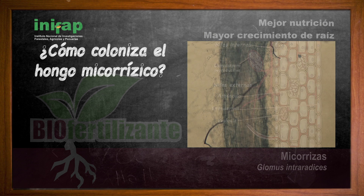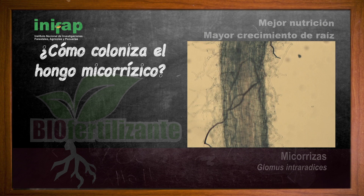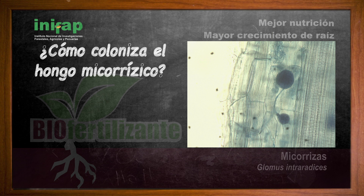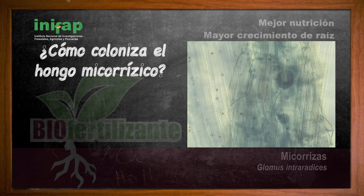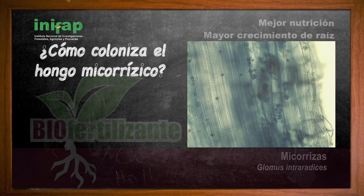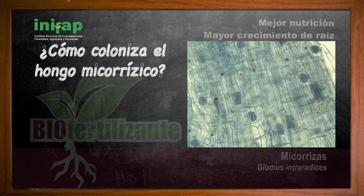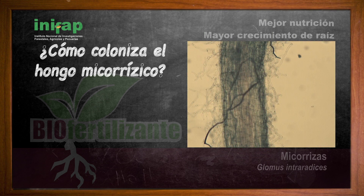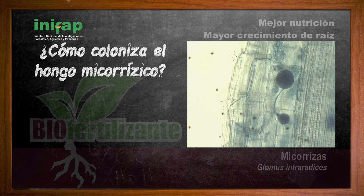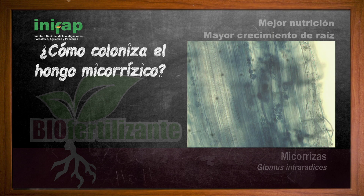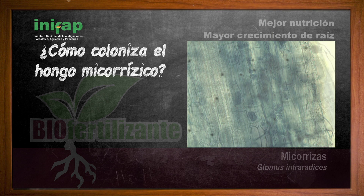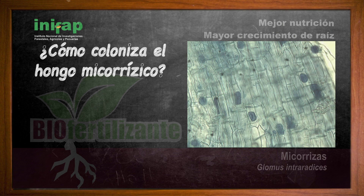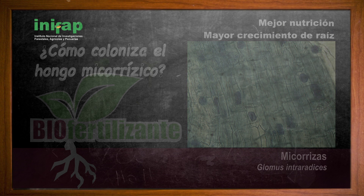Las hifas inician su desarrollo formando pequeños arbúsculos, que son los encargados de realizar el intercambio de iones de fósforo, calcio y zinc, que la planta necesita para su crecimiento. Las hifas tienen un crecimiento externo que incrementa el área de absorción de la raíz, favoreciendo la función de anclaje, absorción de agua y nutrientes. El hongo comienza a formar estructuras de almacenamiento y esporas para garantizar su especie.